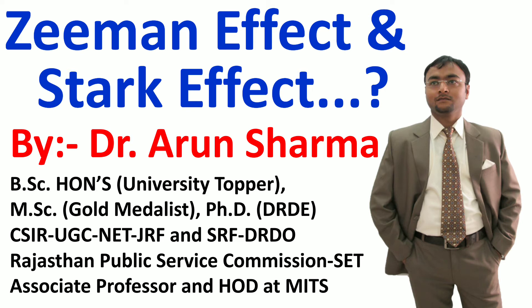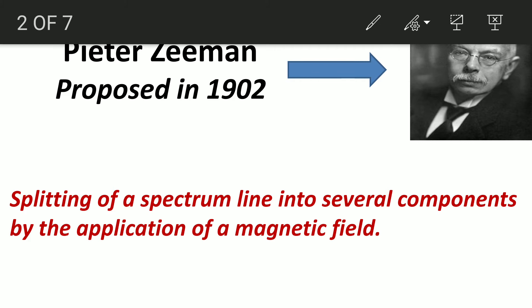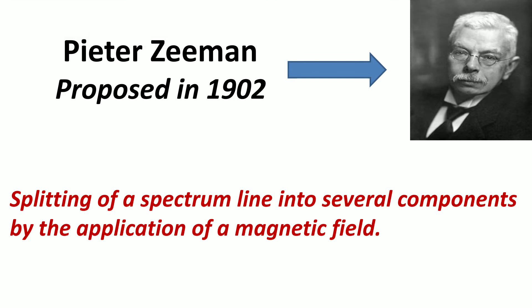This results in emission spectra. The main difference between the Zeeman effect and the Stark effect is that the Zeeman effect is observed in the presence of an external magnetic field, whereas the Stark effect is observed in the presence of an external electrical field. First, we will discuss the Zeeman effect.